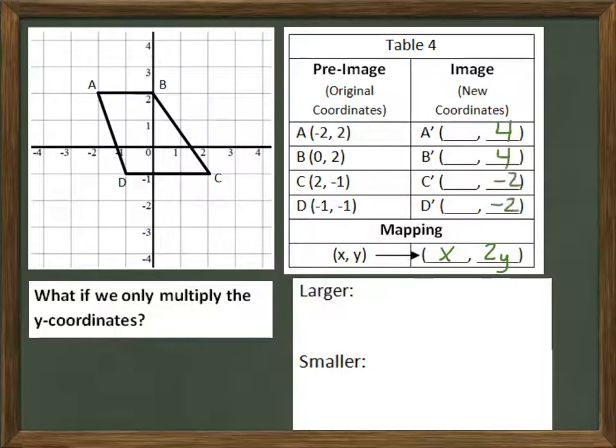So if I multiply all the y-coordinates by two, I would get four, four, negative two, and negative two. X-coordinates stay the same. There's no difference. So let's plot those on the picture.